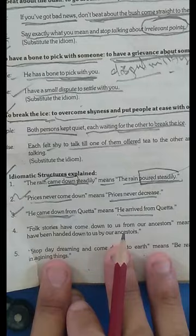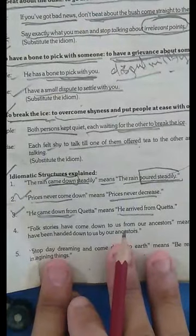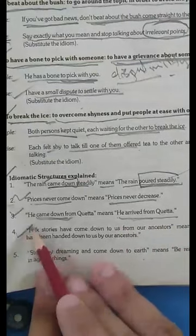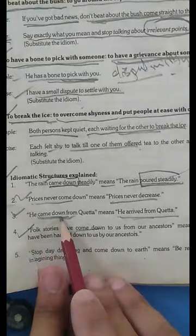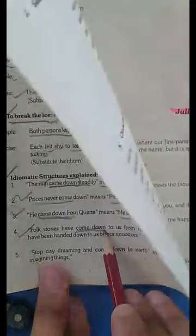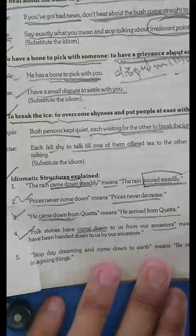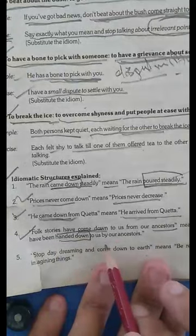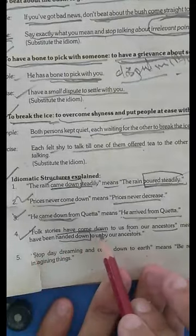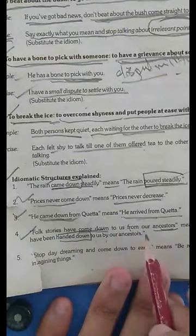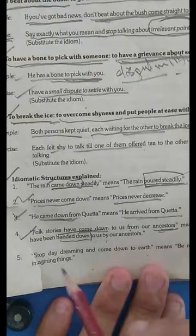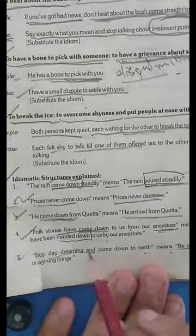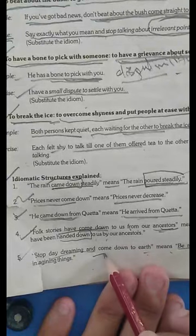We use these phrasal verbs or idiomatic structures, and they give a sense or meaning according to the usage in sentences. Number four: 'Folk stories have come down.' 'Came down' has a different meaning in the fourth sentence. 'Came down from our ancestors' means ancestors gave or transferred. 'Folk stories have been handed down to us from our ancestors' means the folk stories have been handed down or transferred to us from our ancestors.